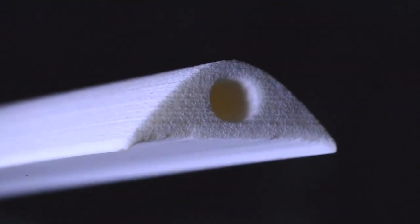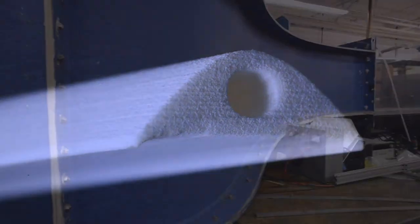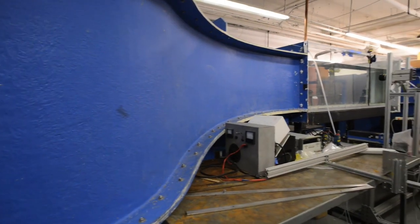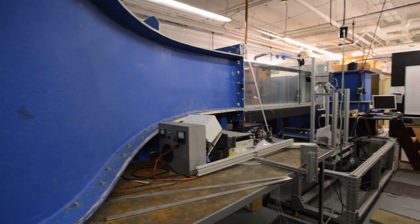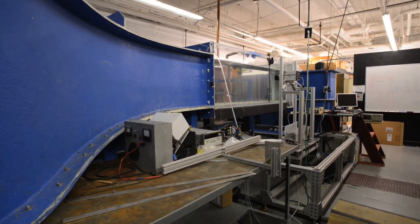We used a 3D printer to make a model of the snake's cross-sectional shape. We put the model in a water tunnel at Virginia Tech to directly measure the forces that the snake's shape creates.